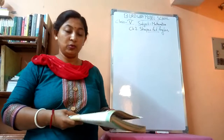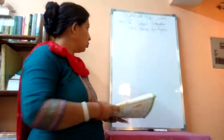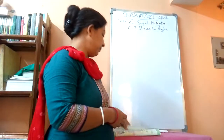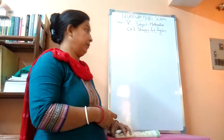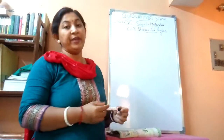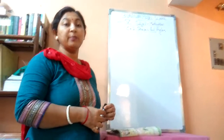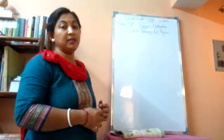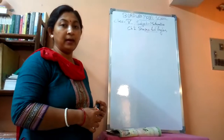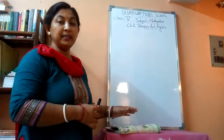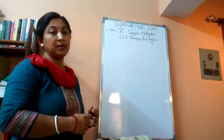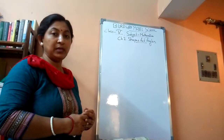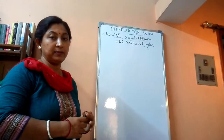What are angles? Angles — you know that when two rays are meeting together they form an angle. And in your Math Magic, in this chapter, three types of angles are discussed.